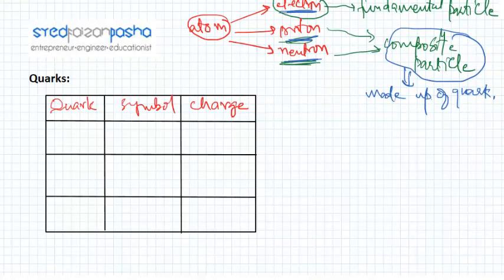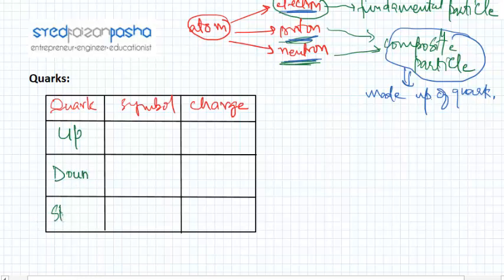I've made a table here. We need to study three quarks: their symbols and their charges. The first is the up quark, the second is the down quark, and the third is the strange quark. The up quark is represented by the symbol small 'u', the down quark by small 'd', and the strange quark by small 's'. The up quark has a charge of plus two-thirds times the elementary charge. The down quark has a charge of minus one-third times the elementary charge. The strange quark also has a charge of minus one-third times the elementary charge.